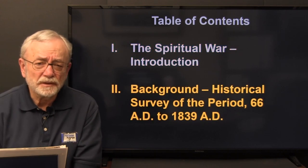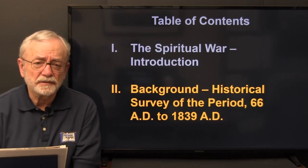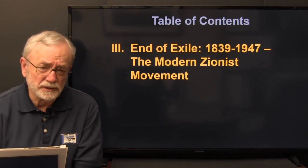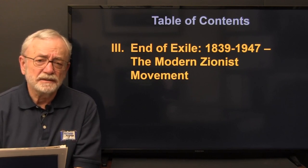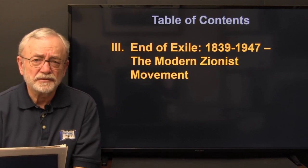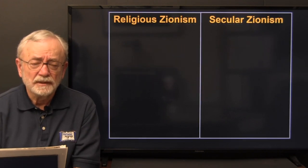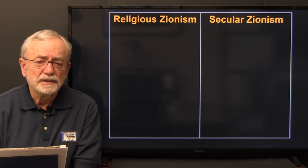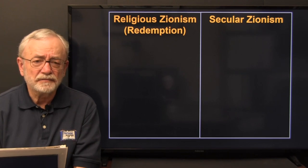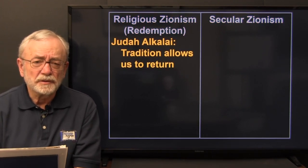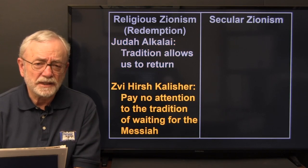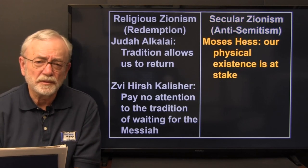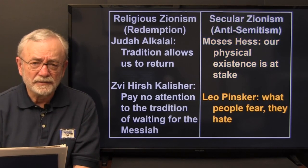So we finished the spiritual war and the historical background. Then we moved into Roman numeral three, dealing with the end of exile from 1839 to 1947 and the modern Zionist movement. We saw that two branches of Zionism began the movement: Religious Zionism and Secular Zionism. Religious Zionism's motivating philosophy was redemption, promoted by Rabbi Judah Alkali and Rabbi Zvi Hirsch Kalischer. Secular Zionism was motivated by anti-Semitism, promoted by Moses Hess and Leo Pinsker.